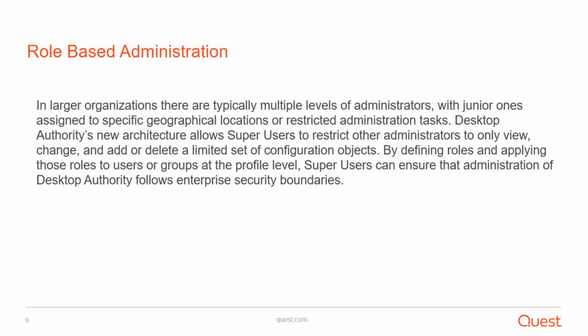In larger organizations, there are typically multiple levels of administrators, with junior ones assigned to specific geographical locations or restricted administration tasks. Desktop Authority's new architecture allows super users to restrict other administrators to only view, change, and add or delete a limited set of configuration options. By defining roles and applying these roles to users or groups at a profile level, super users can ensure that administration of Desktop Authority follows enterprise security boundaries.